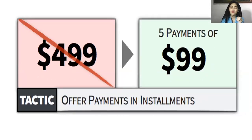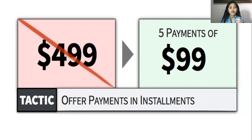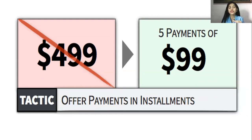The last pricing tactic used by entrepreneurs is dividing the price into installments or offering payments in installments. For example, the original price is $499; divided into 5 payments, it becomes $99. Customers feel it's cheaper or lighter, but it's the same price. Another example is 'save up to' or bundling products together — it looks like a sale, but the original price remains the same. These are examples of price impression tactics.